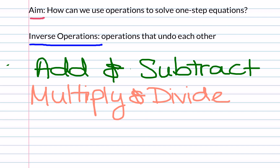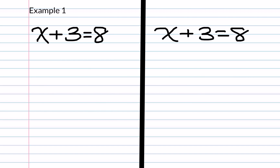So now let's try our first example. Example 1 gives you x plus 3 is equal to 8. There are two methods in which we solve it. The first method is to see what operation is in front of the number on the same side as our x. As you can see, this is the addition symbol. The inverse operation of addition is subtraction, so we must subtract 3 from the left side in order to get our x by itself.